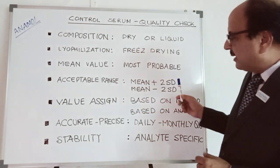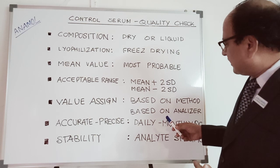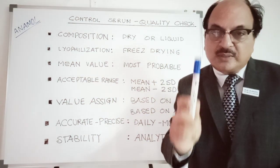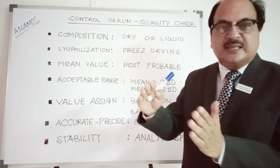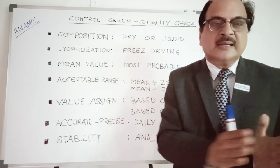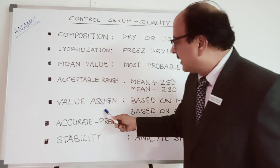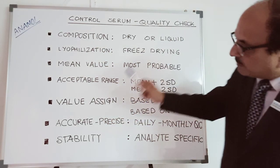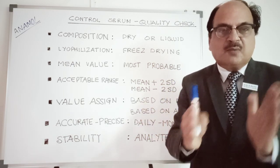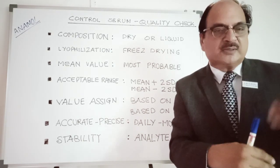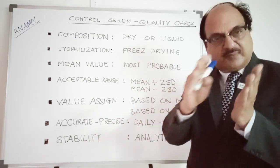Once you understand mean and acceptable range, it's important to know how values are assigned. Values are assigned based on methodology — for HDL analysis, you can use the precipitating method or the direct homogeneous method. Control serum manufacturers specify the value based on method, so for one analyte you get values for multiple methods, each with a mean value and acceptable range.